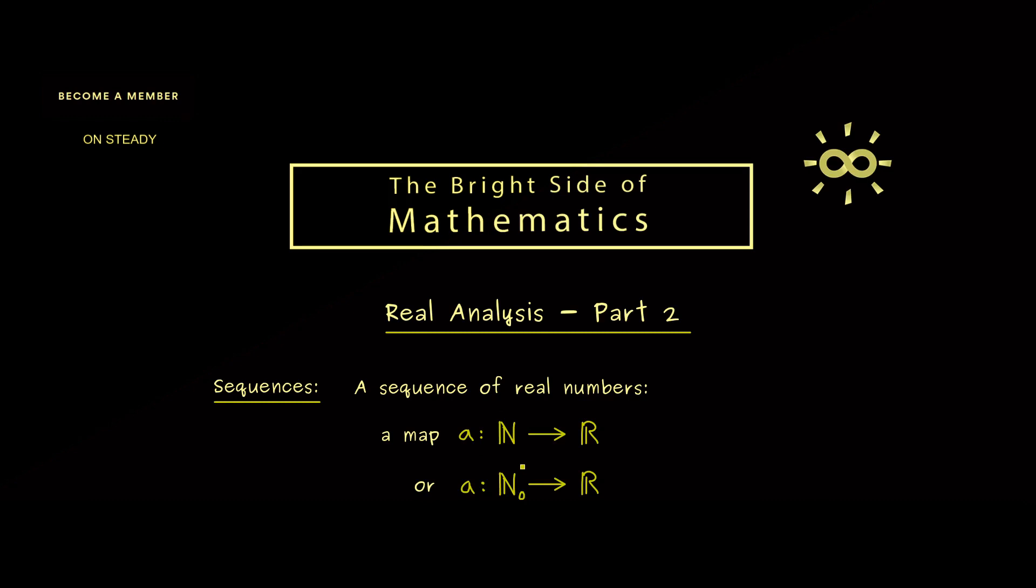Please recall that in the natural numbers we don't include 0, but in N₀ we do. The choice depends on whether you want to start counting with 1 or with 0. When we deal with sequences, we seldom write down such a map but rather an infinite list of numbers. We put 1 into the function and get a₁, then a₂, a₃, and so on.